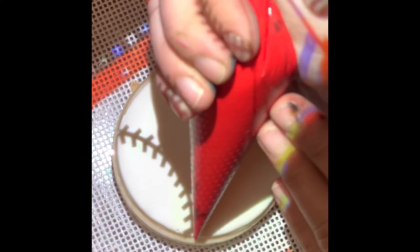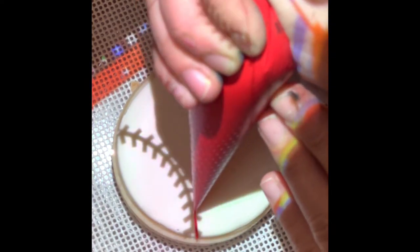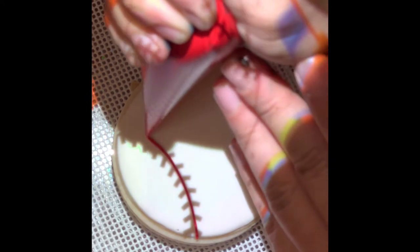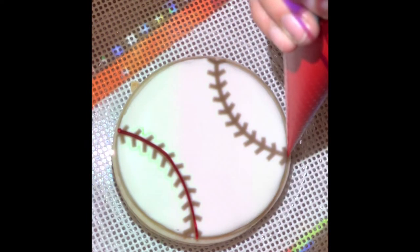Next, I'm going to use my projector to project the outline of the baseballs. I just did this because I really wanted all of the cookies to be uniform and to look the same.